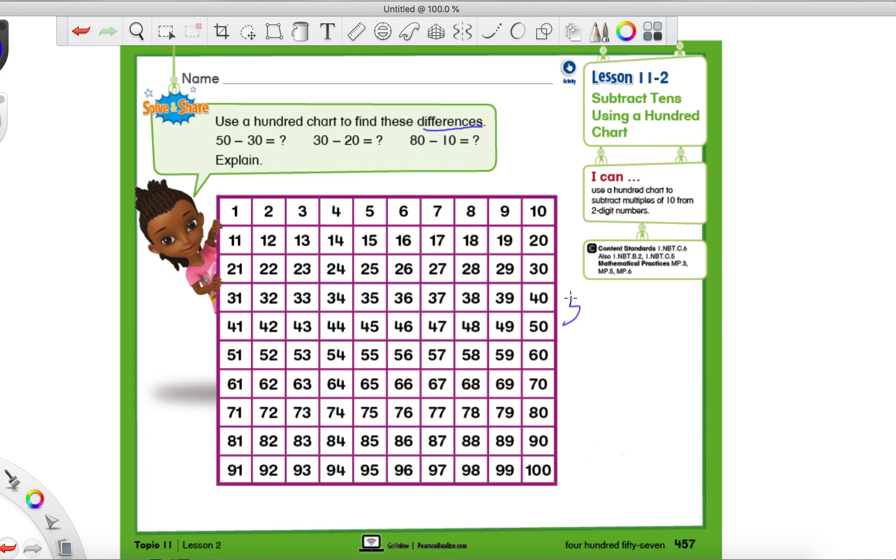So we can start with 50 minus 30. And we just have to find this answer. So when we use a hundred chart, what we do is we start with our total, which is 50. We're going to find that on our hundred chart. It's right here.